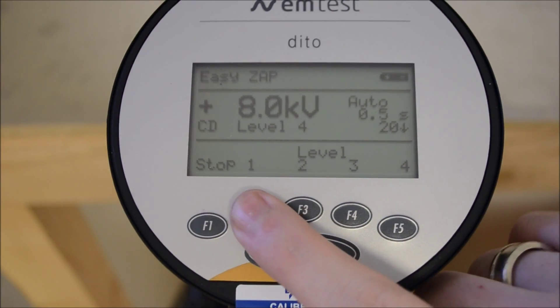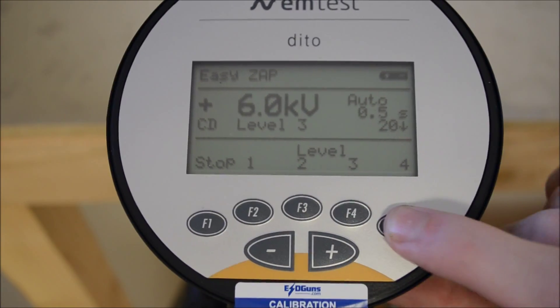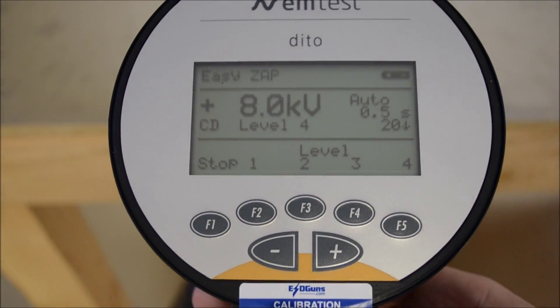Now that all our settings are configured, select F1 to start, which puts the gun into discharge ready mode. A trigger pull now will initiate discharges.